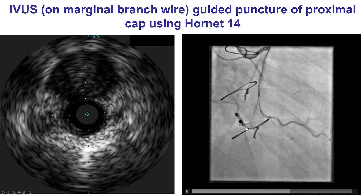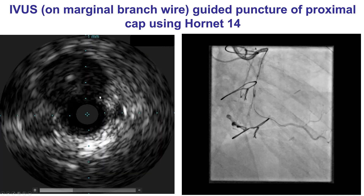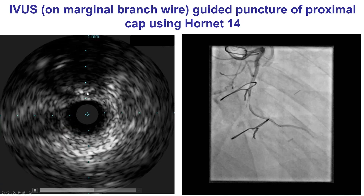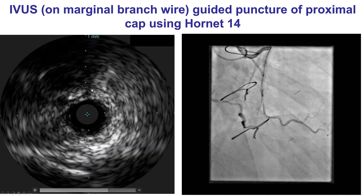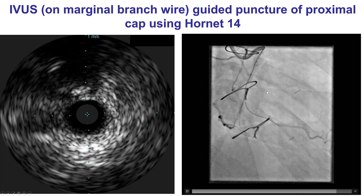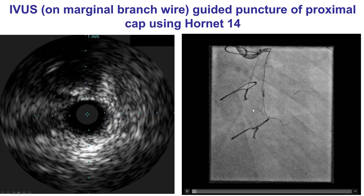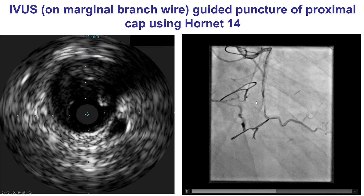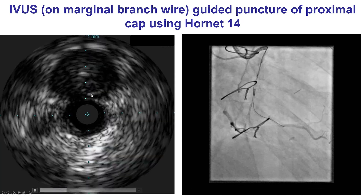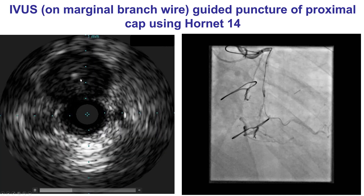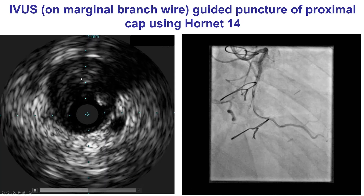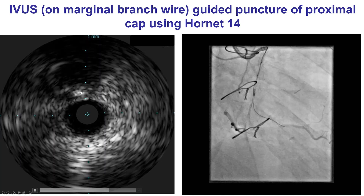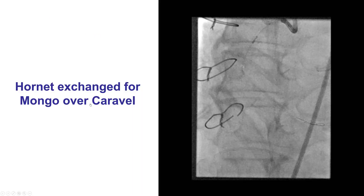Given the ambiguity of the proximal cap, we decided to do intravascular ultrasound, which nicely demonstrated the location of the proximal cap. We then did puncture of the proximal cap under intravascular ultrasound guidance using a Hornet 14 guide wire. As we can see on the IVUS, the wire seems to be entering into the intima, into the plaque of the chronic occlusion.